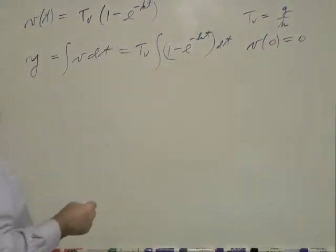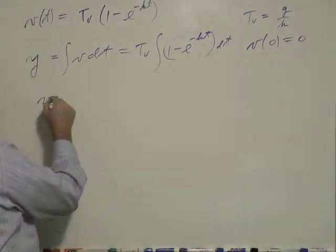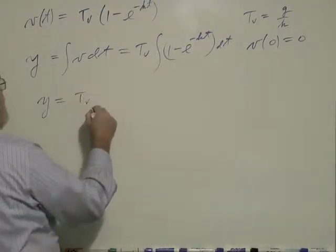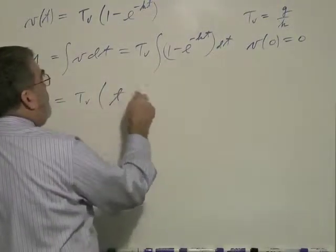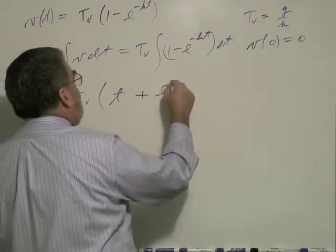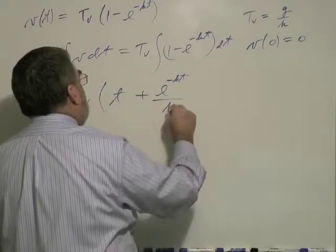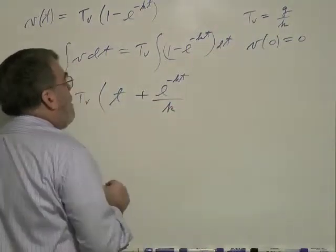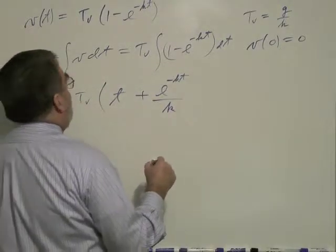And we just integrate this stuff inside here. So y would be terminal velocity, parentheses, I integrate here, I've got t. Integrate here, looks like I have a plus e to the negative kt over k. And then we also get an additive constant.